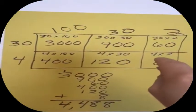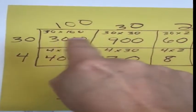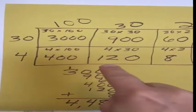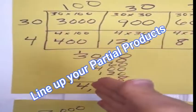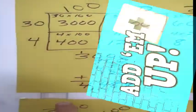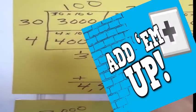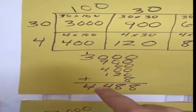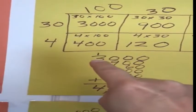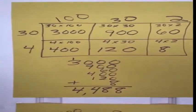This last box is four times two, which is eight. I use the number on the side and the number on the top for each box. Now I take all those numbers — three thousand, nine hundred, sixty, four hundred, one hundred twenty, and eight — write them lined up so ones, tens, and hundreds stay together, and add them up. The answer is four thousand four hundred eighty-eight, which matches the traditional method answer.